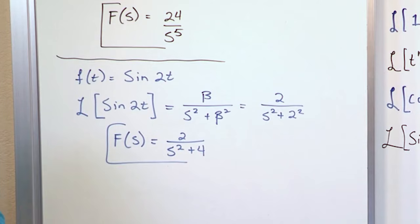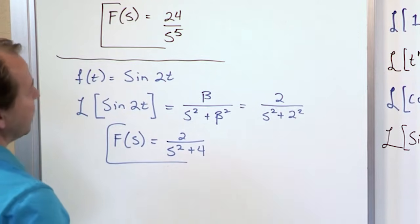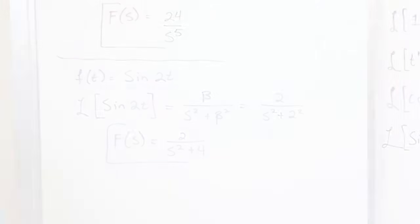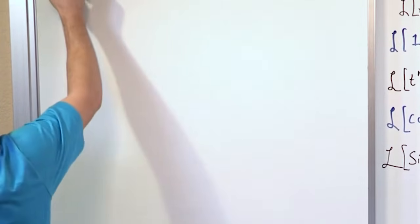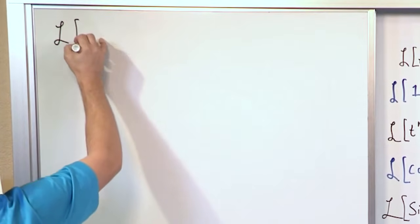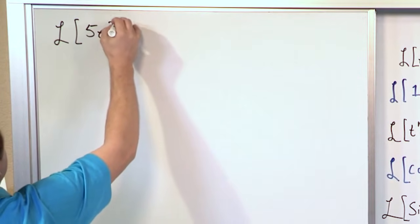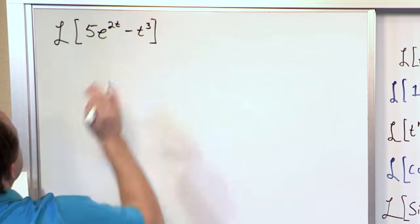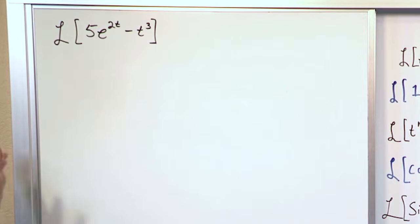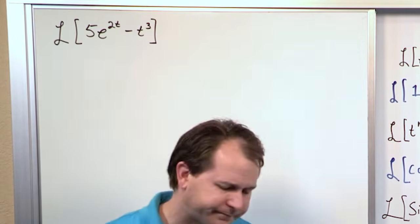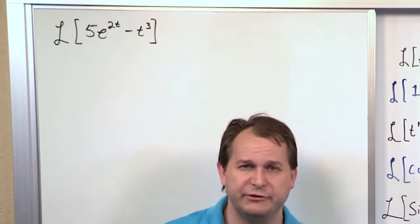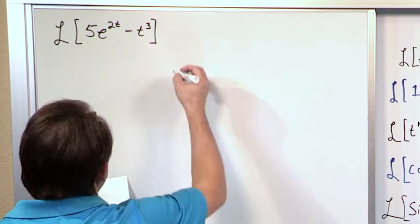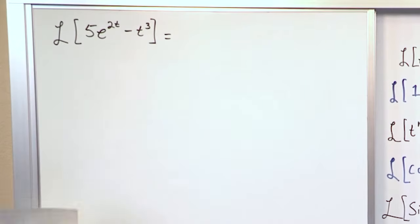So let me go ahead and erase the board here, and we'll work on our next couple of problems, which are really no harder, but we're just going to work our way through our skills. Now the next problem says, let's take the Laplace transform of 5 times e to the 2t minus t cubed. And furthermore, let's try to write it out in integral form, not because we want to do all the calculus, but just to see how it would look. Because that can definitely give you some experience, too.